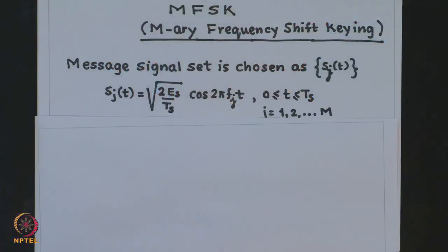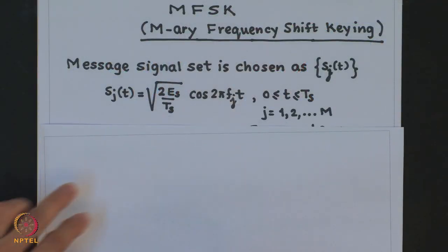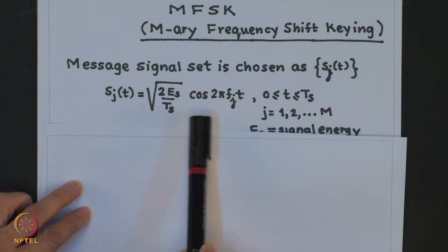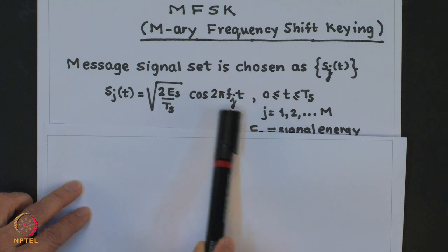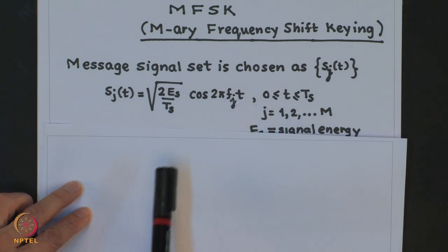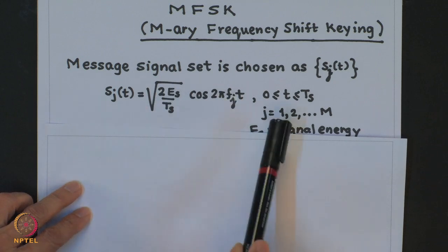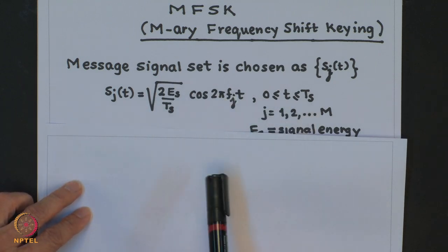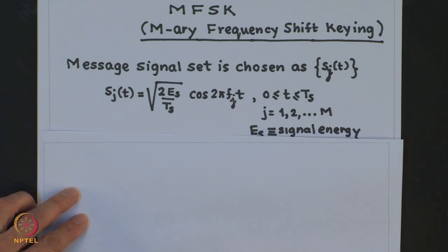Let us begin our study with M-ary FSK. The signal set for M-ary FSK is denoted by M sinusoids, each of frequency f_j, and each of these sinusoids is defined over the duration 0 to T_s, where T_s denotes the symbol interval.